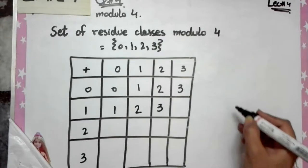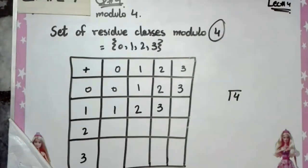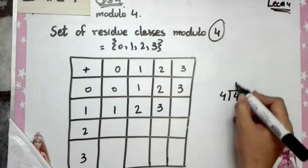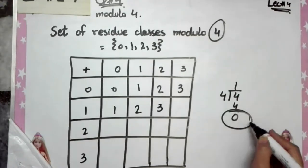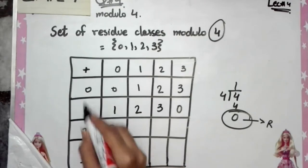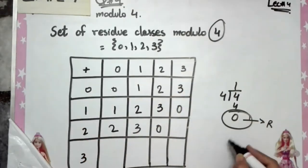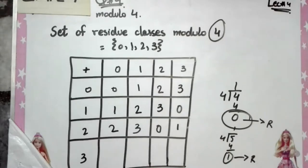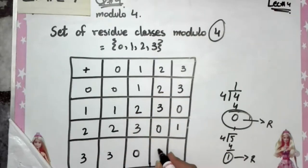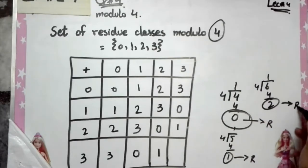For 1 plus 3 equals 4: we divide 4 by 4, one 4 is 4, remainder is 0, so we write 0 in the table. Then: 3 plus 0 is 3; 3 plus 1 is 4, and 4 divided by 4 gives remainder 0; 3 plus 2 is 5, and 5 divided by 4 gives remainder 1; 3 plus 3 is 6, divide by 4 — four 4s are 4, remainder is 2 — so we write 2 in the table.